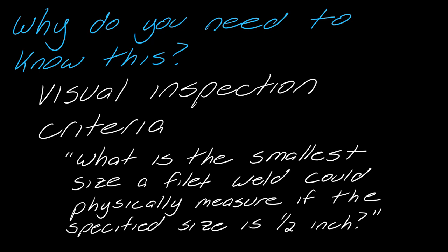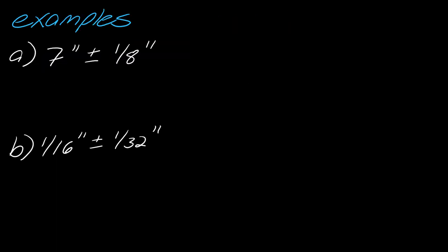And then another place where this would come up would be like visual inspection criteria. So a question like what is the smallest size of filet weld could physically measure if the specified size is half an inch. I can't weld. Maybe one day I'll try welding. It's getting me kind of interested in it. But these are the types of areas where this will pop up. So what I want to make sure you're comfortable with are doing some of those tolerance calculations.